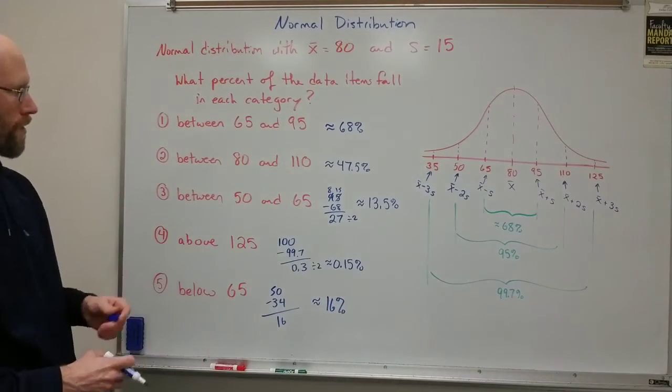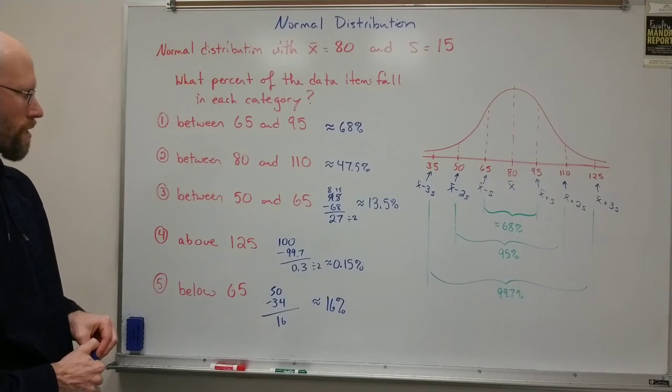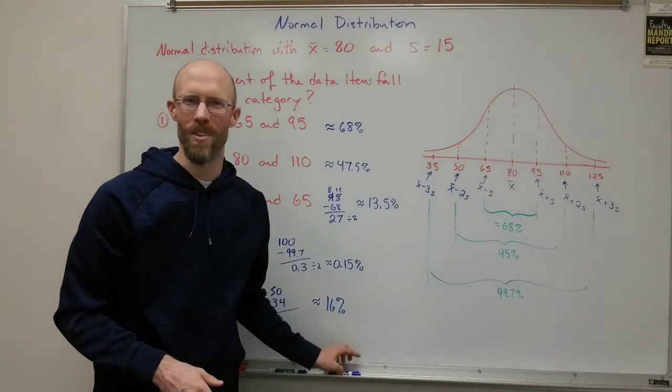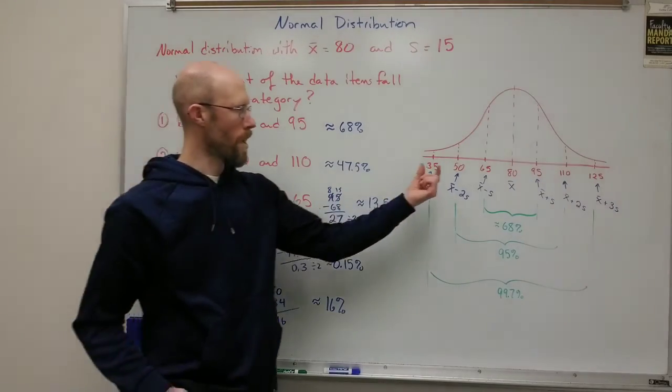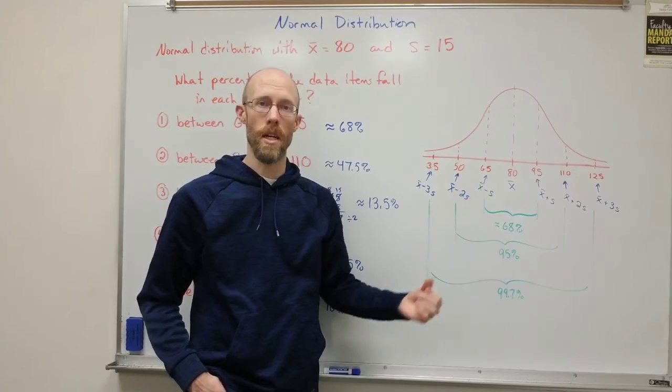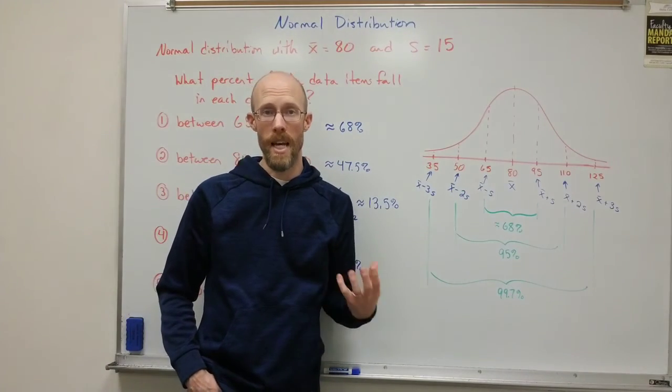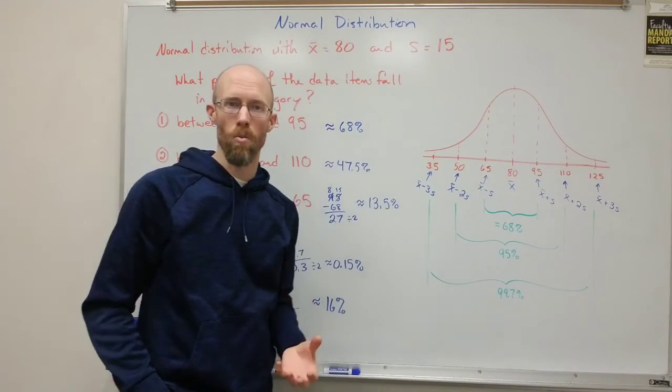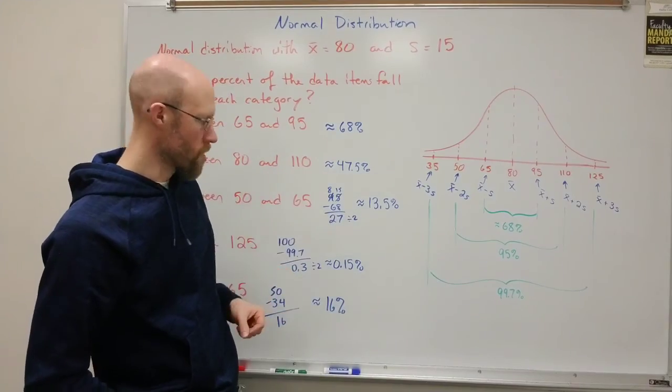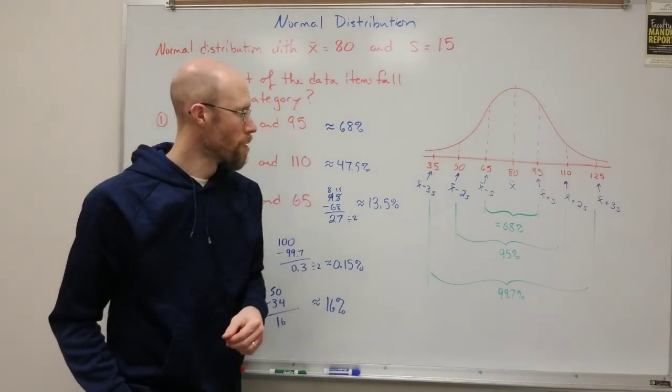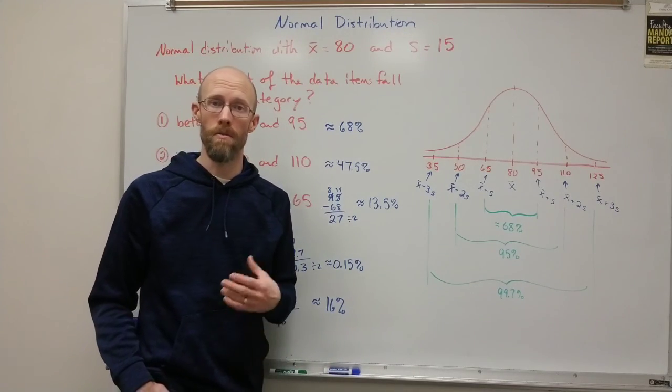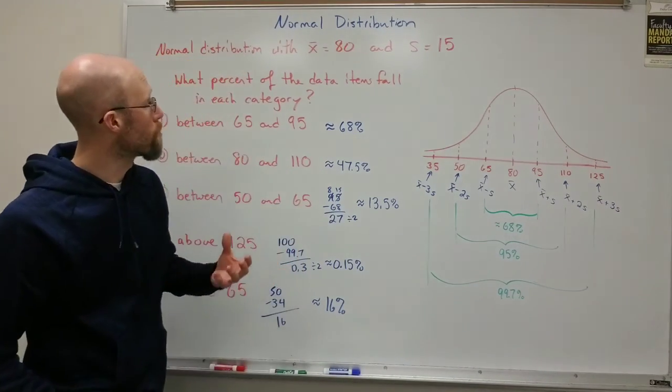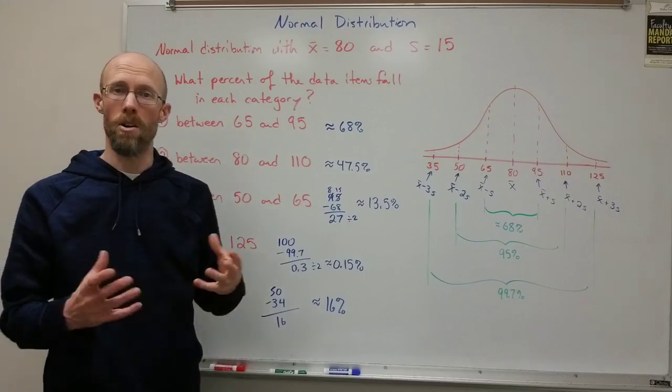So hopefully I've done the arithmetic right. I know I've done the logic correct. And so you can kind of see how you can combine these different regions to get different percent of the data that falls in them. Now, again, it won't be perfect. That's why I put approximations on these. But it's going to be pretty close in a typical normal distribution with a large data set.